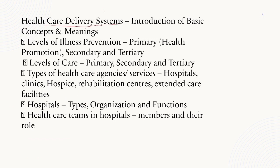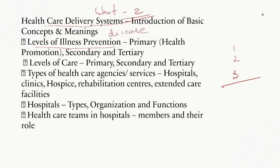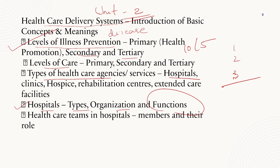Second unit: healthcare delivery systems. This is also already class over — you can study from those videos — three videos: class 1, 2, 3. When you complete, you will finish all these topics: introduction of basic concepts and meanings, levels of illness prevention and disease prevention, primary health promotion, secondary, tertiary — very important, 10 mark and 5 mark question. Levels of care, types of health care agencies, hospitals — very very important. Hospital types, organization, functions of hospital, health care team in hospitals, members and their role.